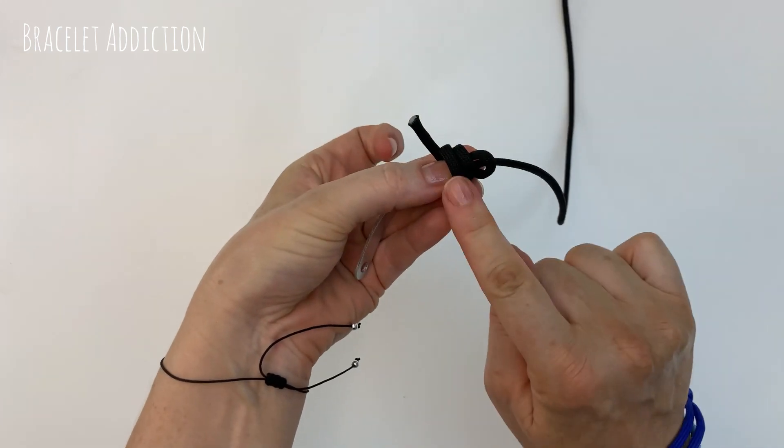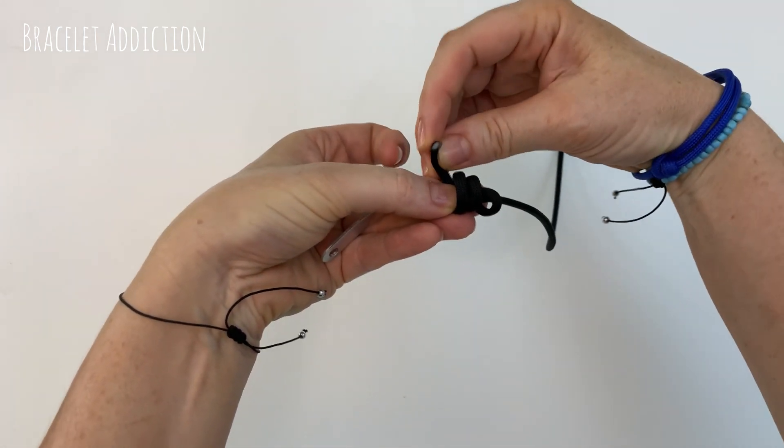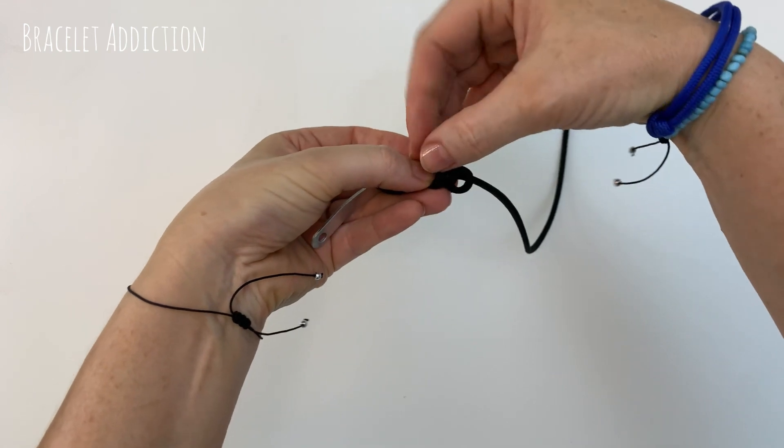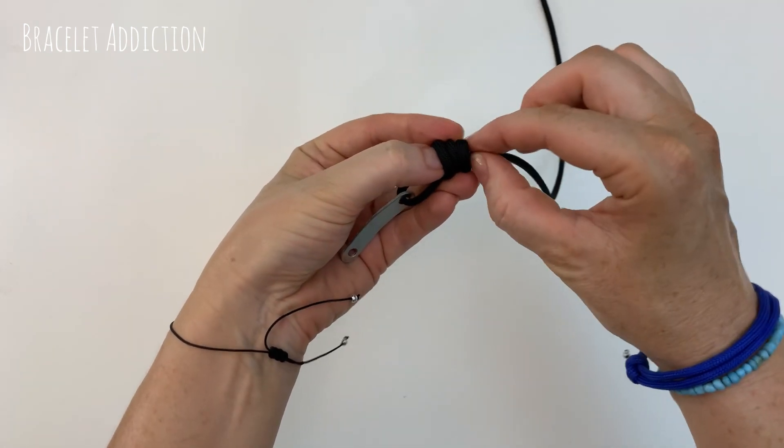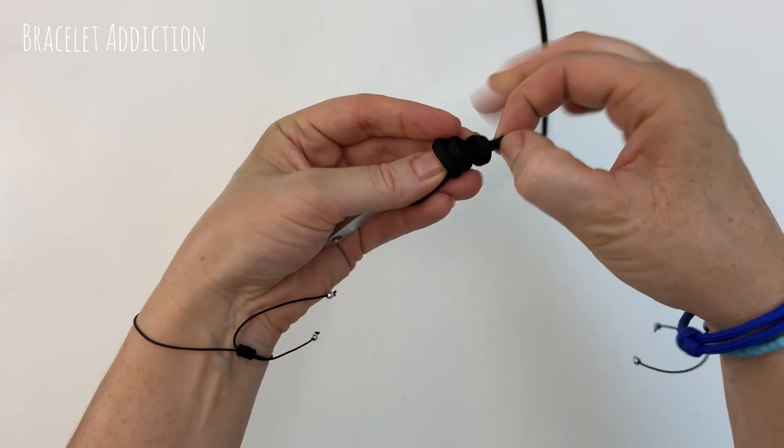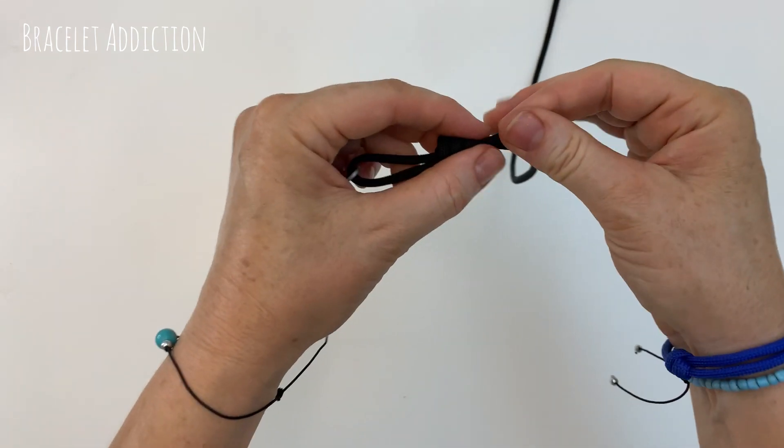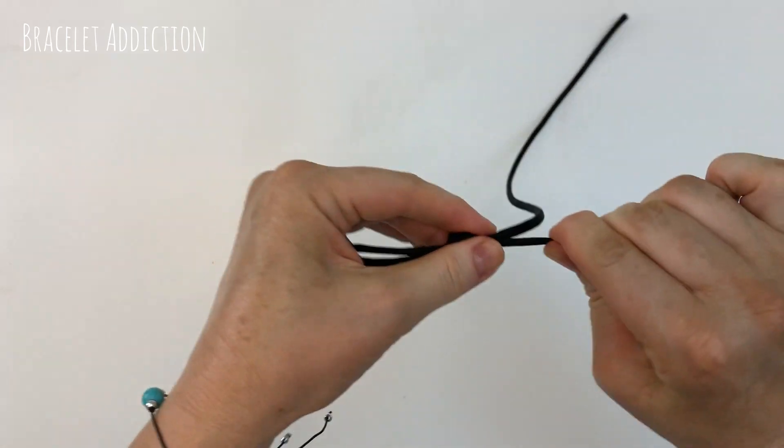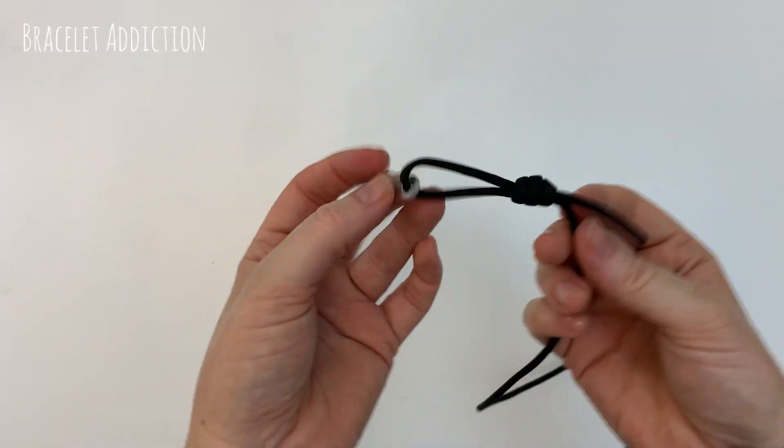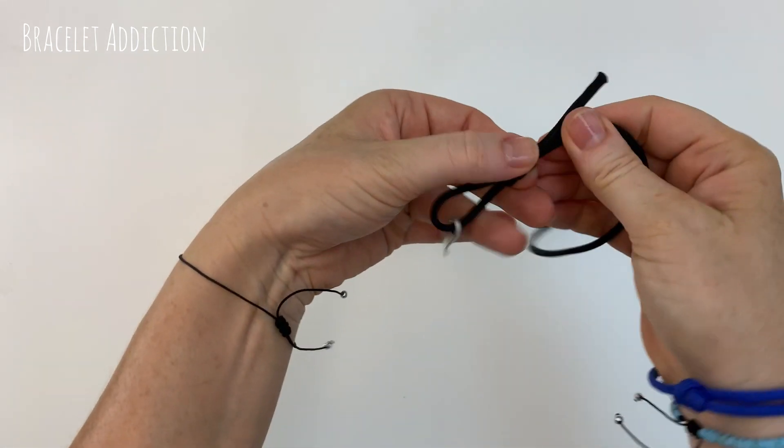So you should have your three loops here and your little tail end. So we gently bend this tail end piece around and poke it down all three loops. Pulling it out the right hand side and gently pulling that knot nice and tight. So that should be your first adjustable sliding knot.